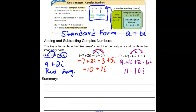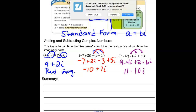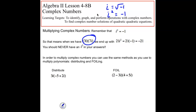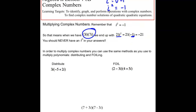We're moving to Day 2's notes. We've looked at adding and subtracting; now we'll focus on multiplying and dividing complex numbers. Remember we defined i as the square root of negative 1, so if we square both sides, i² = -1. If i squareds show up in your expression, you must convert them into negative 1's. We should never have i² left in our answer.